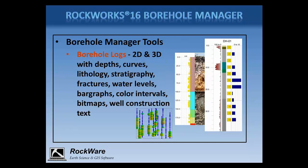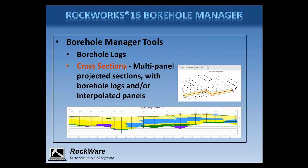You can create cross-sections which display logs only, as well as sections which include interpolated panels — this section is sliced from a lithology model. In 2D, there are three main flavors of cross-sections: a multi-panel section which extends from borehole to borehole, a single-slice profile onto which boreholes are projected, and just recently added to Rockworks 16, a multi-panel projected cross-section. This is specifically designed for geotechnical projects with many boreholes. Instead of drawing the section location from borehole to borehole, you can draw the section line where you like, define a swath distance shown here in yellow, and borehole logs inside that distance will be projected onto the section line.